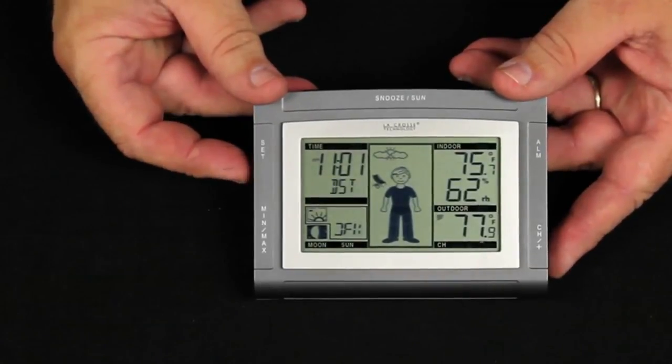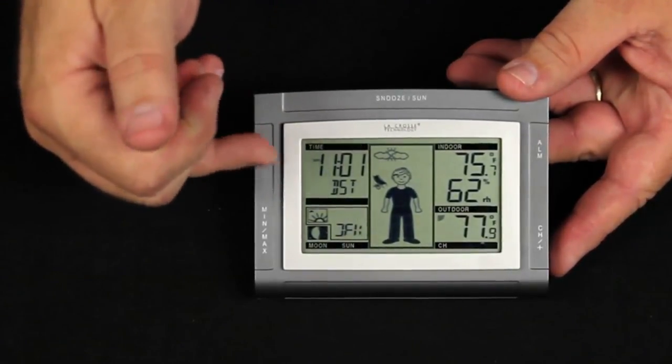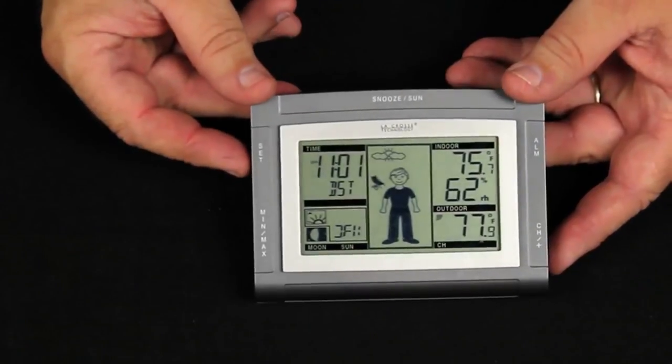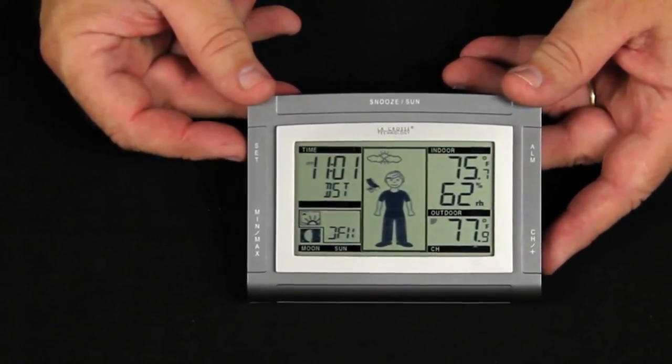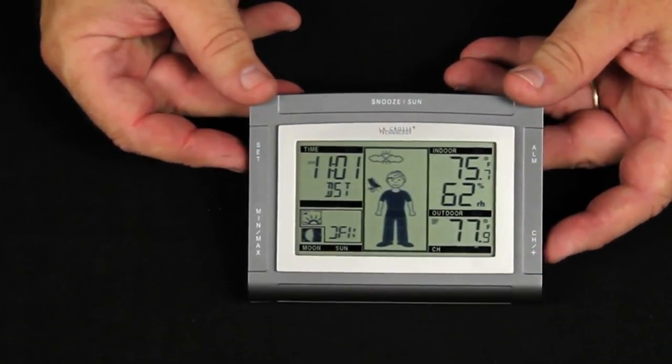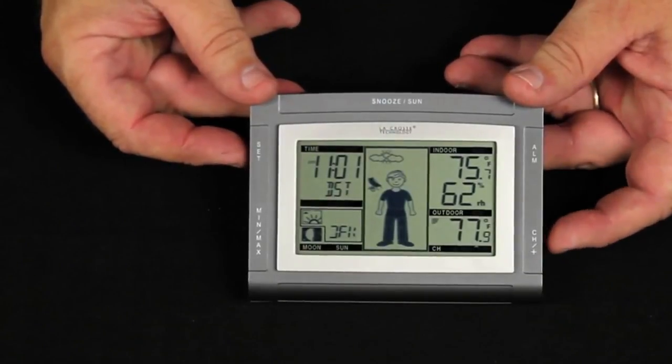I press the set button once again. DST shows up and it's telling me it's on. That means the system will recognize daylight savings time. If I was in a place that didn't have that I'd press this plus button to turn it off.